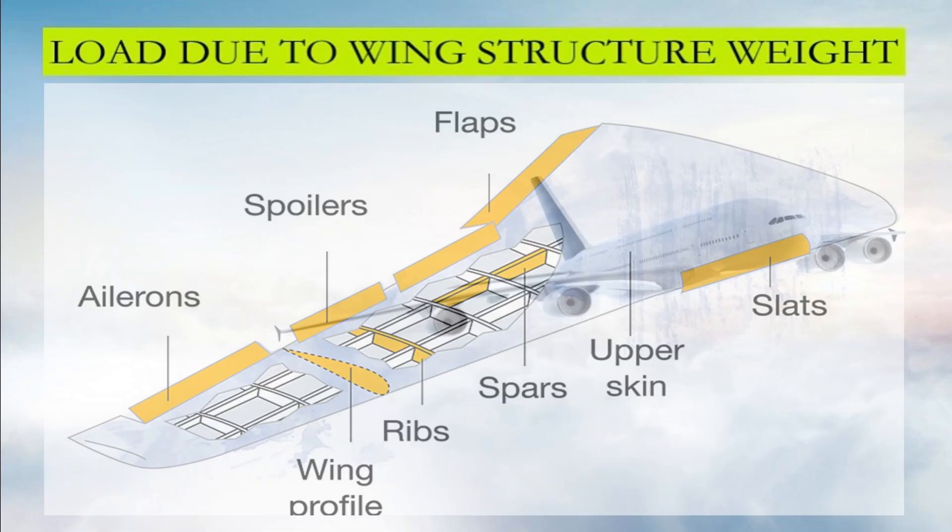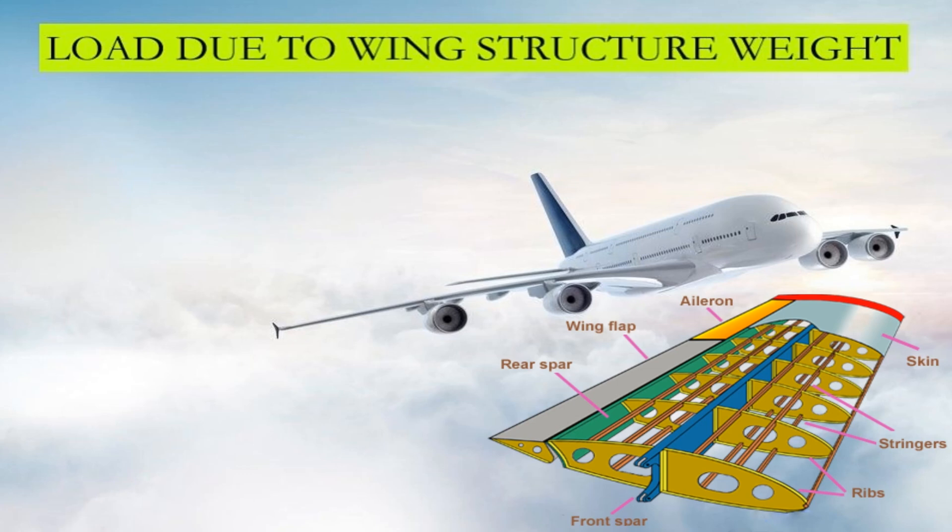The second is the load due to wing structure weight. The primary objective of the wing's internal structure is to withstand the shear and bending moments acting on the wing at the ultimate load factor. The secondary objective is to make the wing as light as possible without compromising the structural integrity of the design.